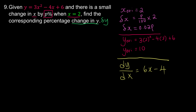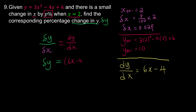We can proceed to find our small change in y using differentiation. Delta y over delta x is a very good approximation of dy over dx. Since we are looking for delta y, we move delta x to the other side. dy over dx is 6x minus 4, times delta x which is 0.02p. Substituting x equals 2: 6 times 2 is 12, minus 4 is 8. So we have 8 times 0.02p.